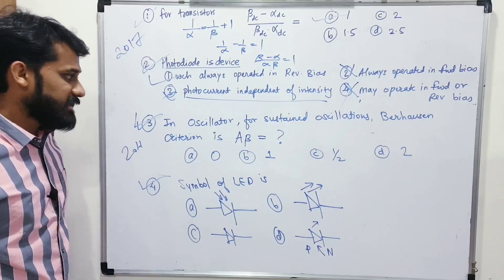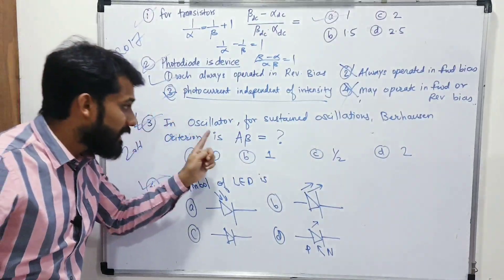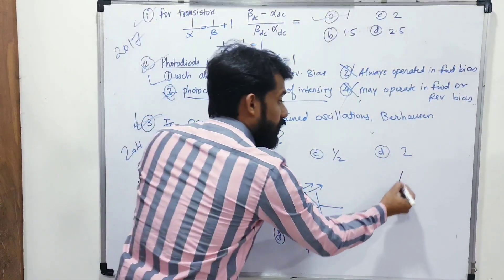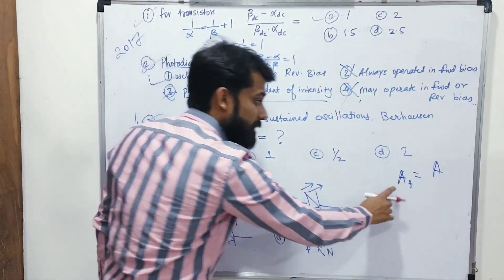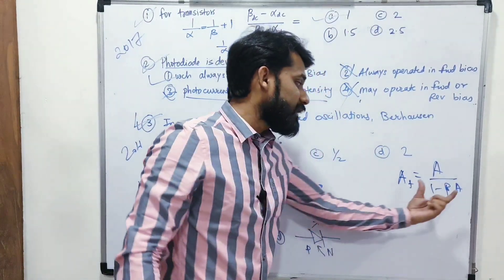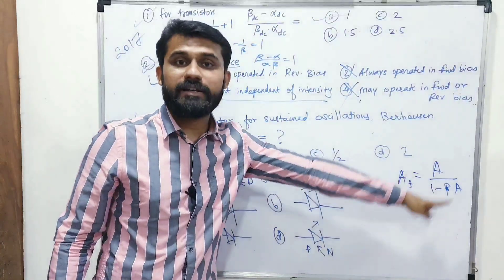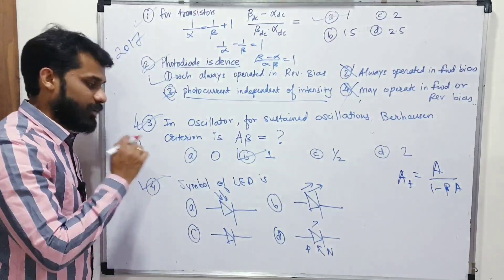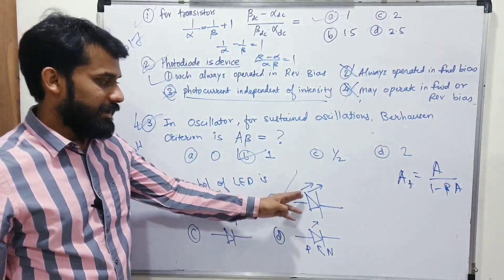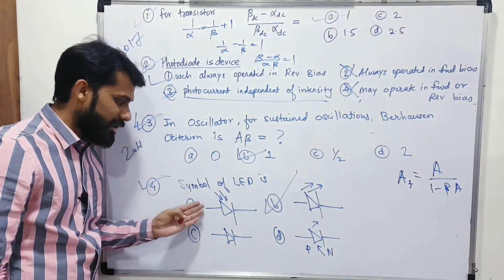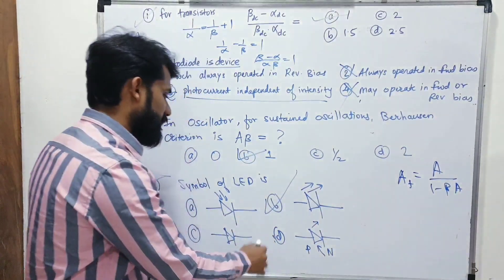2016 CET questions: first asks about Barkhausen's criterion for sustained oscillations in an oscillator. The gain with feedback is AF = A/(1 - β·A). When β·A = 1, the denominator becomes 0, gain becomes infinity, and the circuit sustains oscillations. So A × β = 1. The second 2016 question asks for the symbol of an LED — arrows should point outward (light going out). The correct answer is option B.